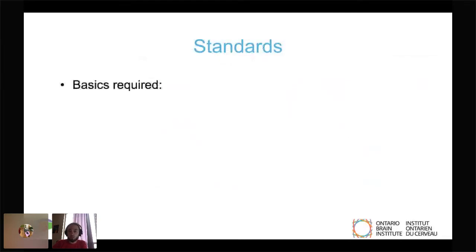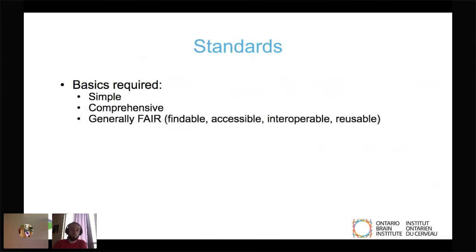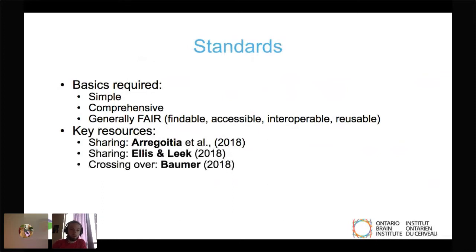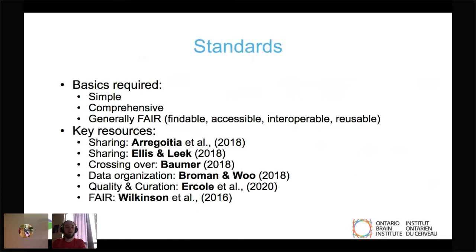This is where our standards really developed from. The basics that we fundamentally require is that they're simple, they are comprehensive, generally FAIR, which we heard a little bit about from Donny. We used very key resources to determine how we're going to build up our standards. A lot of these are about data sharing, crossing between disciplines, data organization, which we heard a little bit of earlier today from Carl, and then quality curation and FAIR principles.